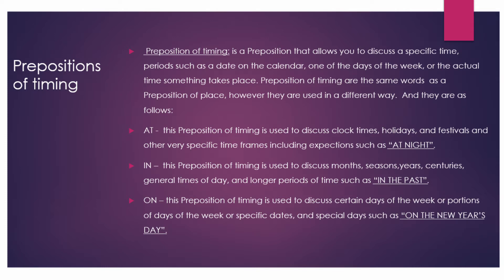'At' is a preposition of timing used to describe clock time, holidays, festivals, and other specific time frames, including expressions such as 'at night.' 'In' is a preposition of timing used to describe months, seasons, years, centuries, general times of day, and longer periods of time such as 'in the past.' 'On' is used to discuss a certain day of the week, specific dates, or a special day such as 'on New Year's Day.'